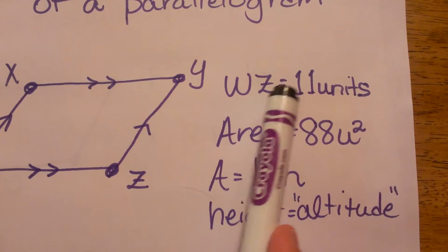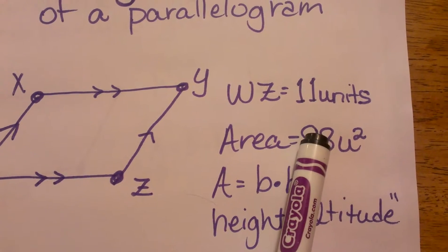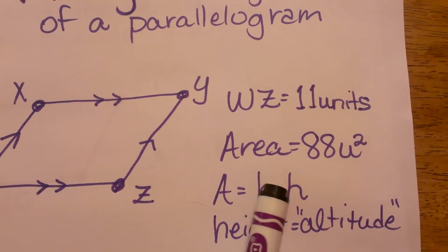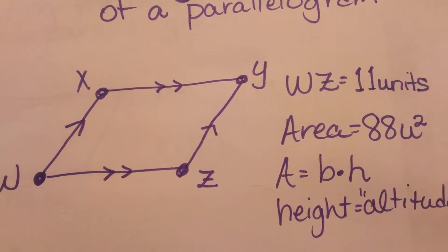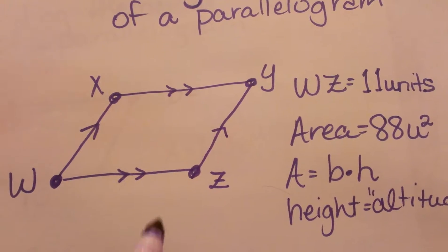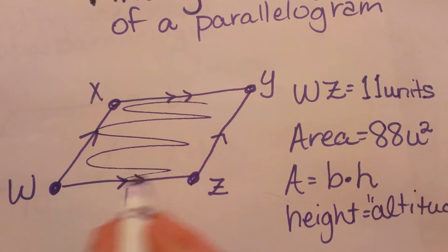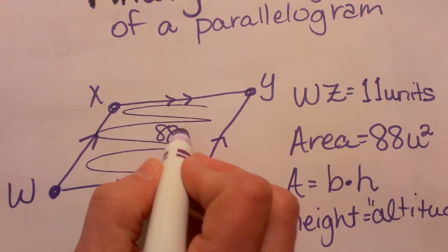We know the side WZ is 11 units and the area is 88 square units. We have to work backwards to find the height. I'm going to label my diagram WZ as 11 and the area, which is the space inside, as 88 square units.